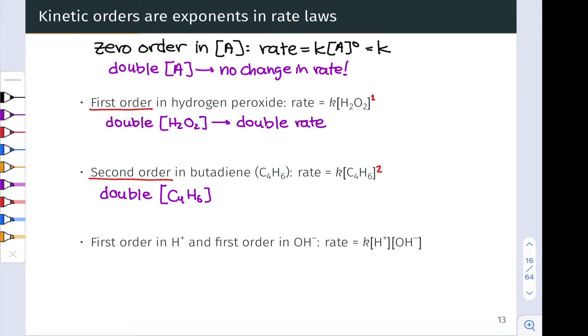What happens here if we double the concentration of C4H6 in this reaction? Well, now, since the concentration term is squared in the rate law, the rate will quadruple, or increase by four times, two squared.